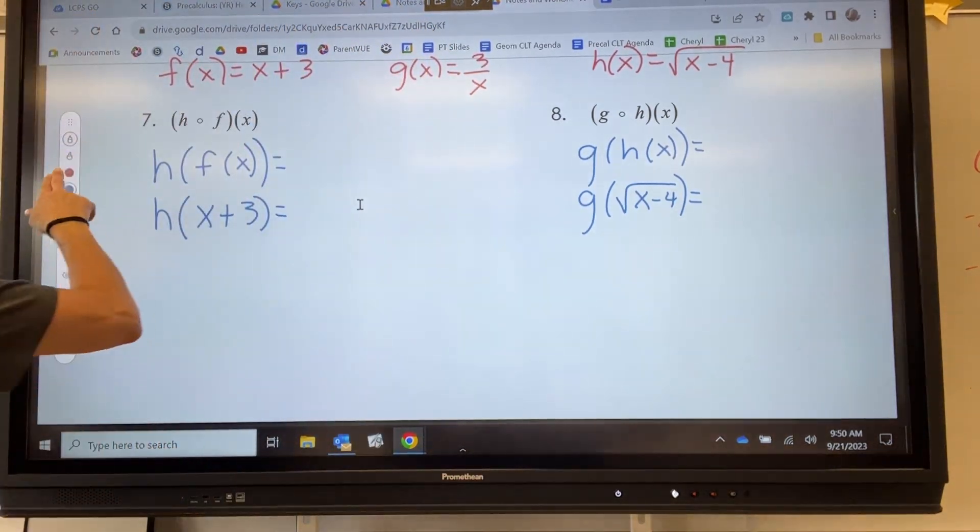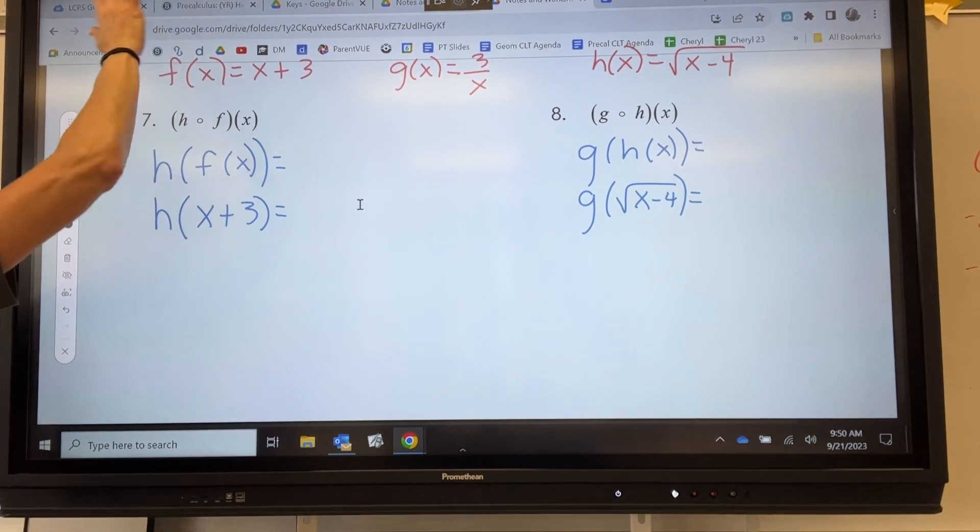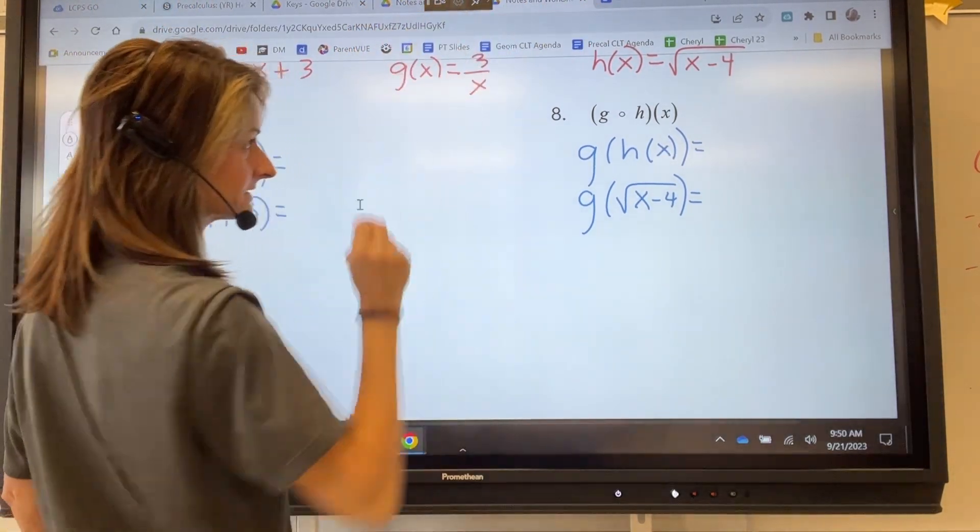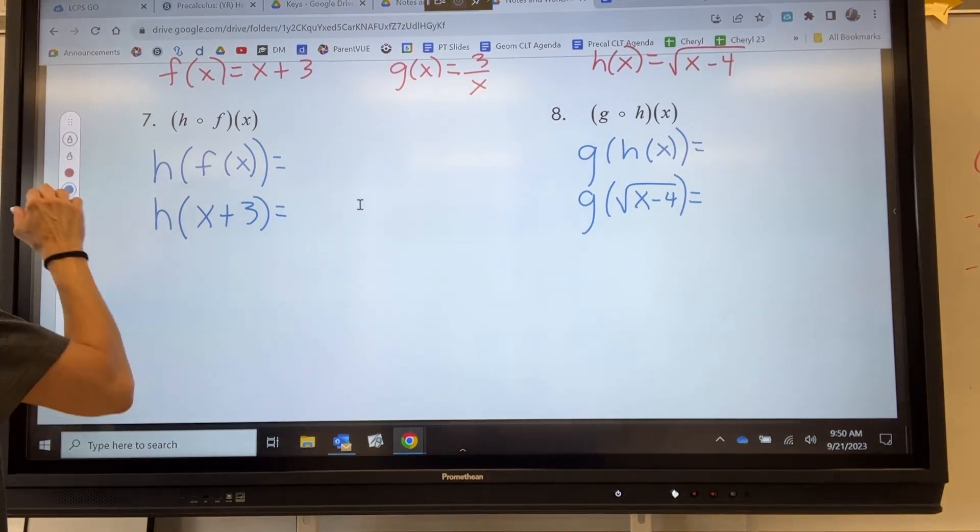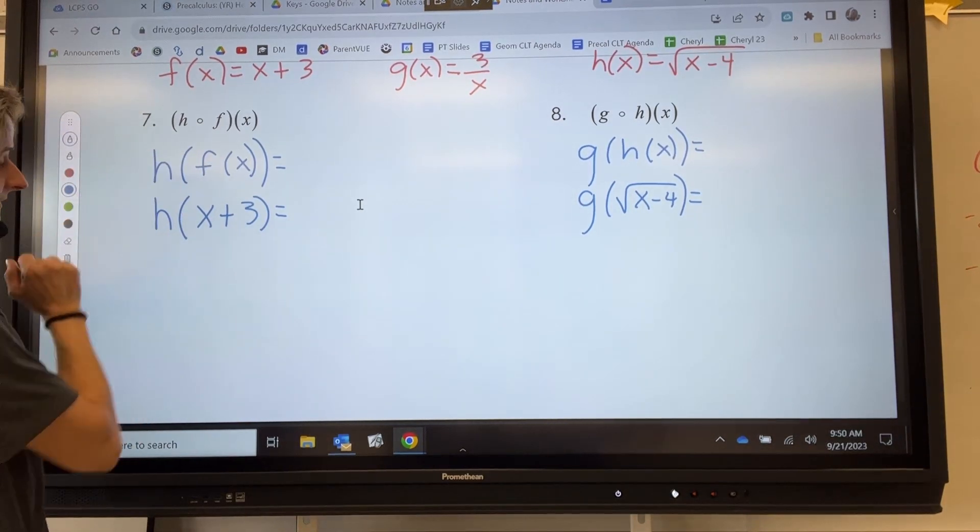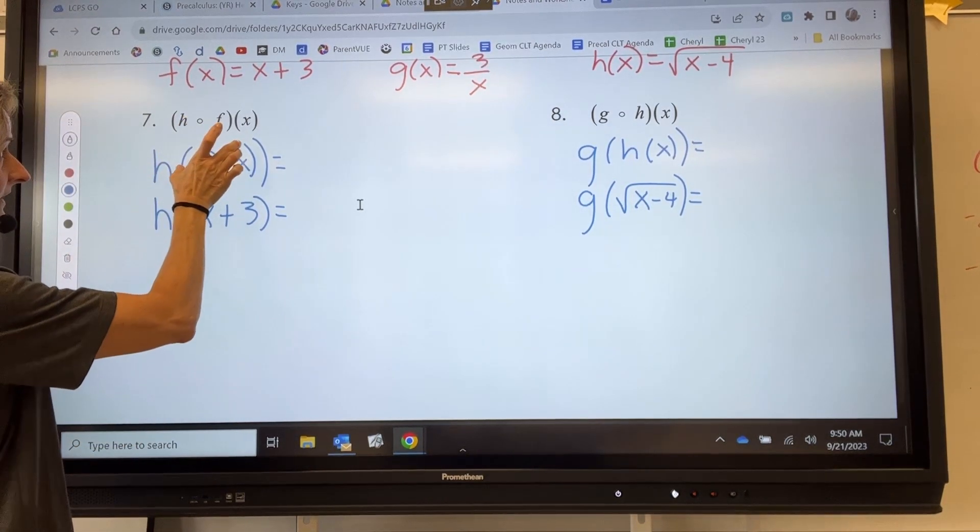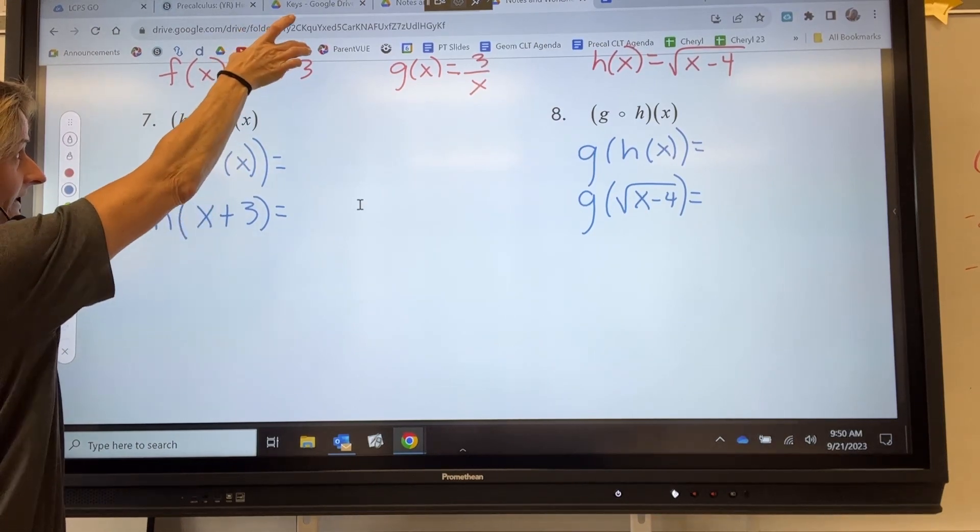Number 7, h of f of x. I went ahead and rewrote the functions up here just so we can see them on the board, and rewrote this as h of f of x. Now, f of x is what? We're given x plus 3.